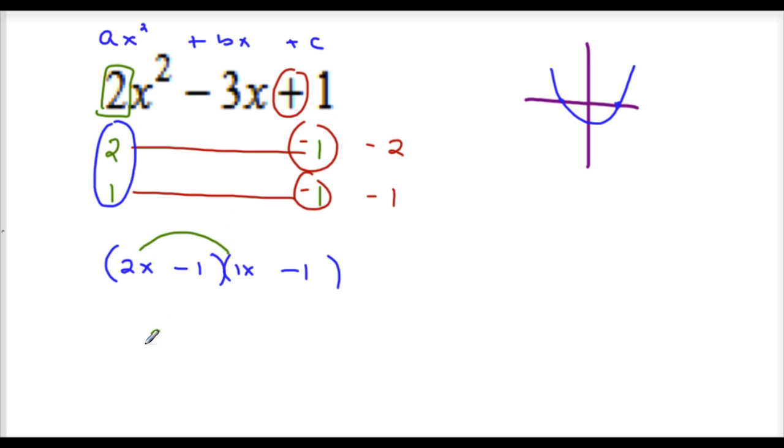2x times x is 2x squared. 2x times negative 1 is negative 2x. Negative 1 times x is negative x. And negative 1 times negative 1 is positive 1. So here we have 2x squared minus 3x plus 1.